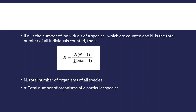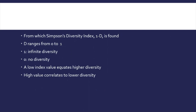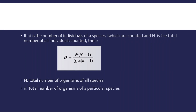Capital N is the total number of organisms of all species combined, while small n is the total number of organisms of a particular species. From these values, the Simpson's Diversity Index, expressed as 1 − D, is calculated.